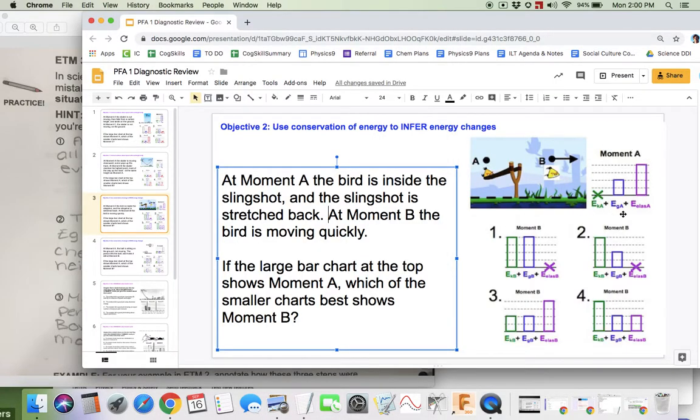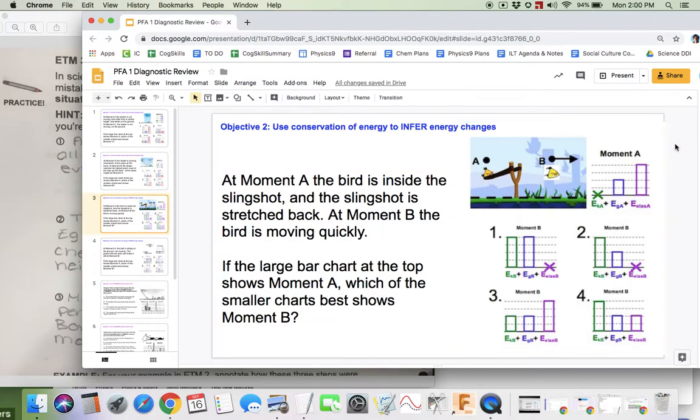I can tell at moment A, this is a correct bar chart for moment A. And I can tell this slingshot is storing elastic energy, and the bird is up high a little bit. This is a total of 1, 2, 3, 4, 5, 6 boxes.